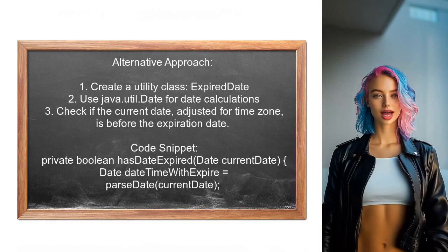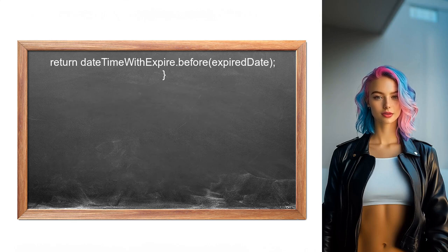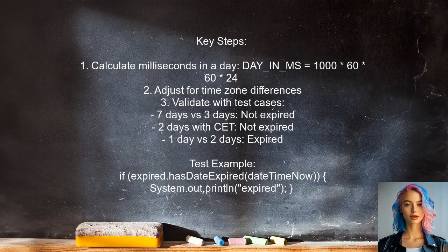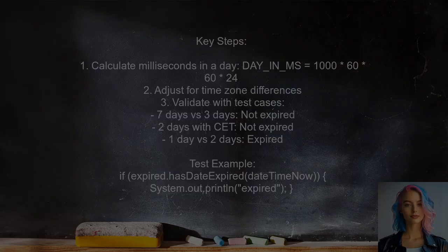Another approach involves creating a utility class called ExpiredDate. This class uses java.util.Date to determine if a date has expired based on a specified number of days and accounts for time zone differences. The expiration is calculated by multiplying the number of days by the milliseconds in a day and adjusting for time zone differences, with test cases provided to validate the functionality.